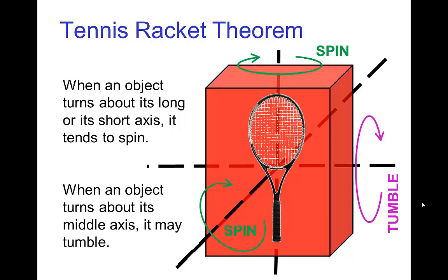And when you have an object flying through the air and it's turning, if it's turning around the short axis or the long axis, it will spin, but there's a third axis that's perpendicular to those two, and if it turns around that axis, it will tumble.